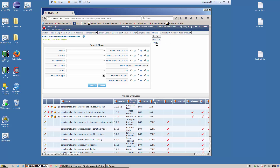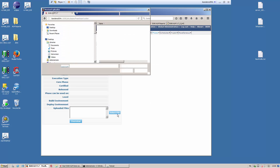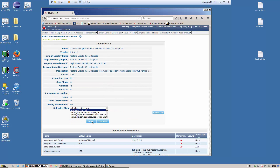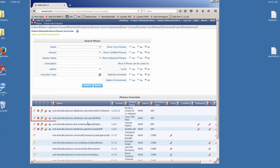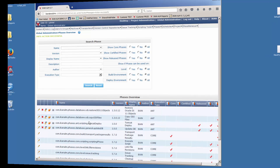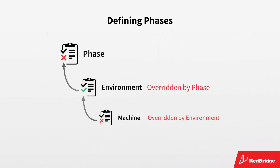You must repeat this procedure for each of the phases you want to use. The two phases we imported are now displayed on the phases overview. Phases can be defined on phase, machine, or environment level. In this demo, we will keep the definition of the parameters as simple as possible. You can find an in-depth explanation of the different ways of defining parameters in the ICANN ALM user guide. If you need advice on a particular situation, you can always contact the ICANN ALM support team.